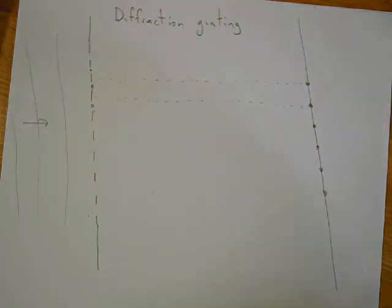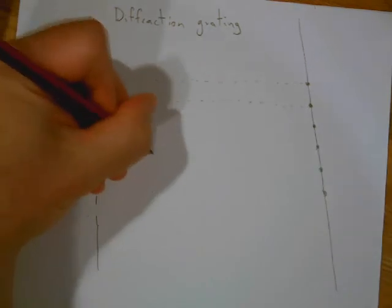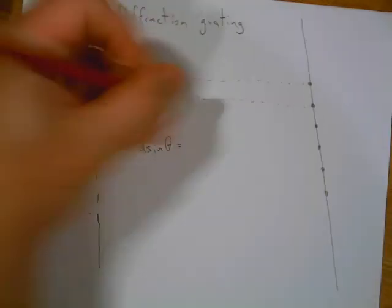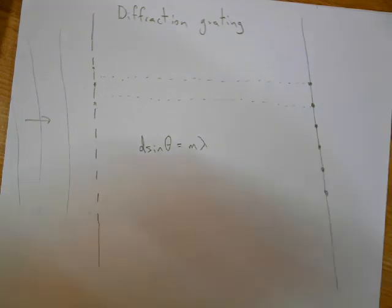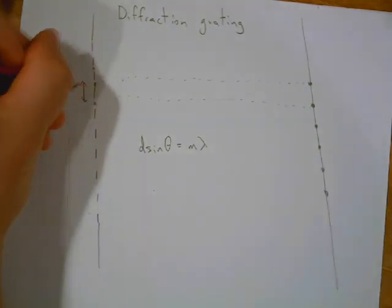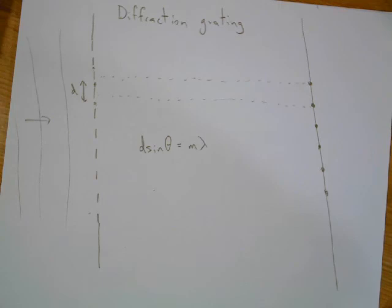But it's going to be the same thing where your equation is still going to be d sine theta equals m lambda. The only thing you have to remember, d is really this distance from slit to slit.